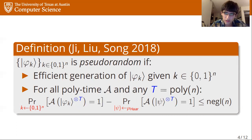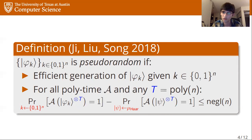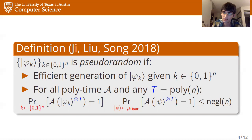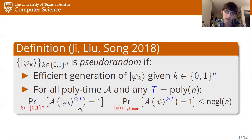One thing that might jump out is that this looks a lot like the definition of a pseudorandom generator — in some sense this is just a quantum analog of a pseudorandom generator. Just as a pseudorandom generator is a computational approximation of the uniform distribution, pseudorandom states are computational approximations of the HAAR measure. The key difference is we allow the adversary to have multiple copies of the state, justified by the no-cloning principle, since an adversary can potentially do much more with many copies.